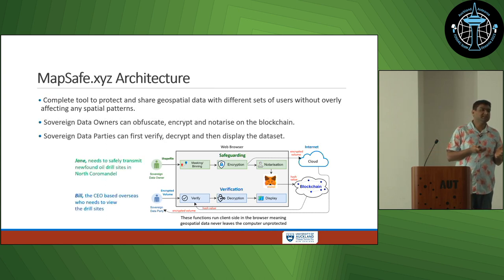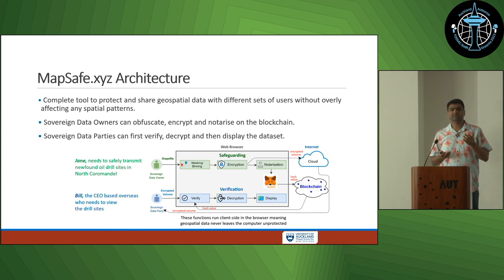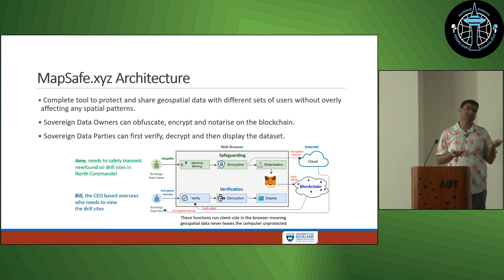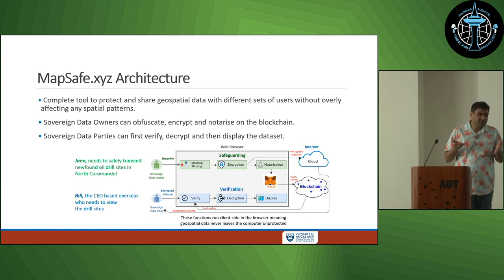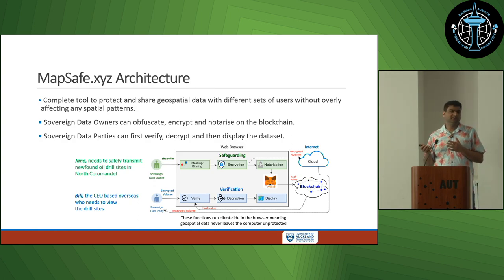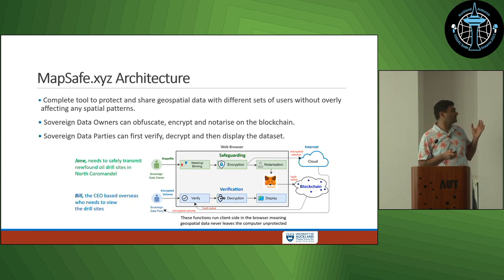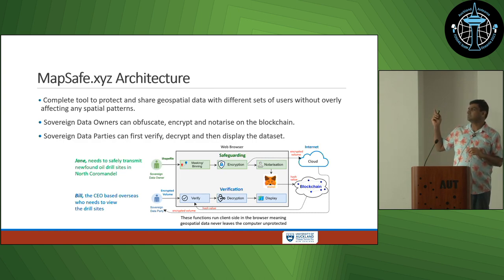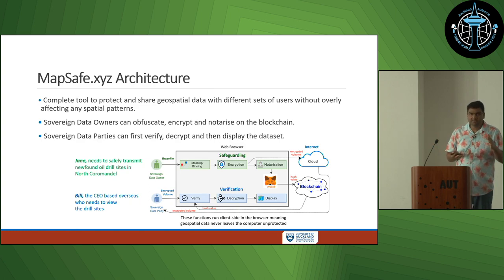Throughout this presentation, I will be using an example of two users. Jane is a sovereign data owner who wants to safeguard the locations of some new oil drill sites she has found north of Auckland — North Karamander. She wants to share it with Bill, who sits in North America somewhere, and there are different sets of users in between as well.